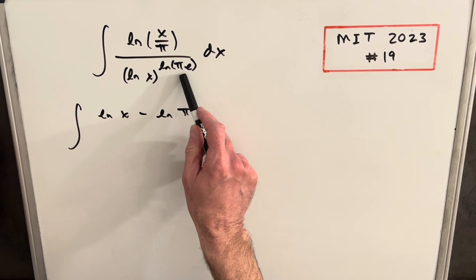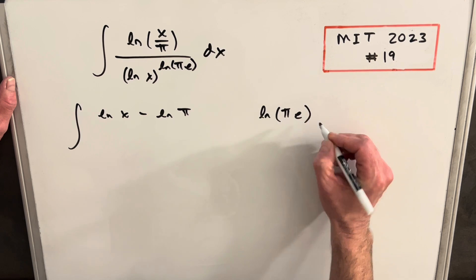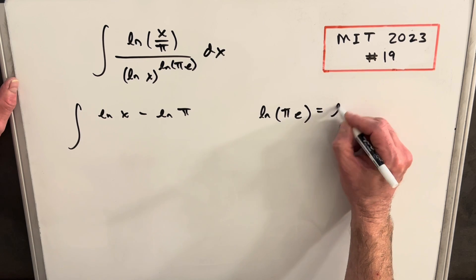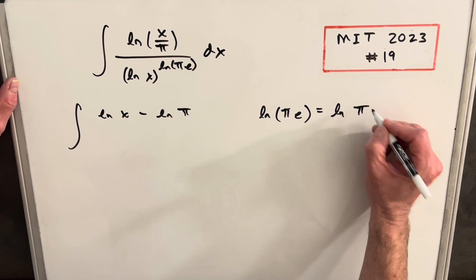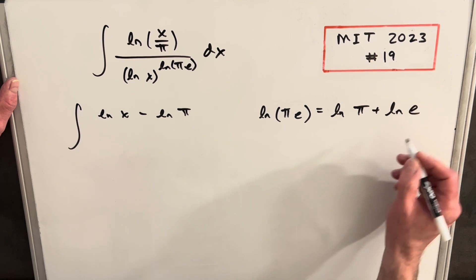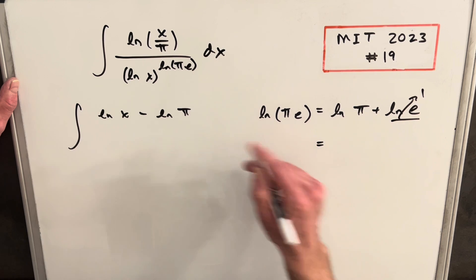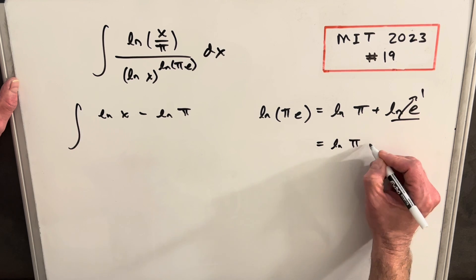And then before I rewrite the denominator, I'm looking at just ln(πe). We can split this up because we're multiplying, so we can rewrite this as addition. So we can rewrite it as ln π plus ln e. But ln e is just one.